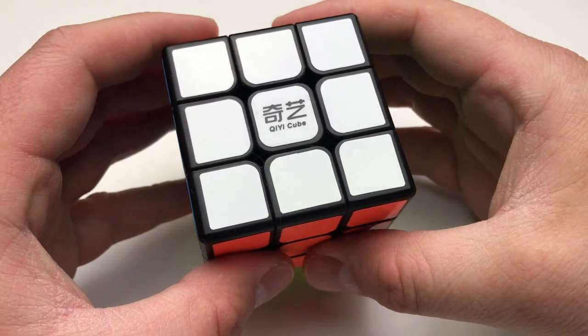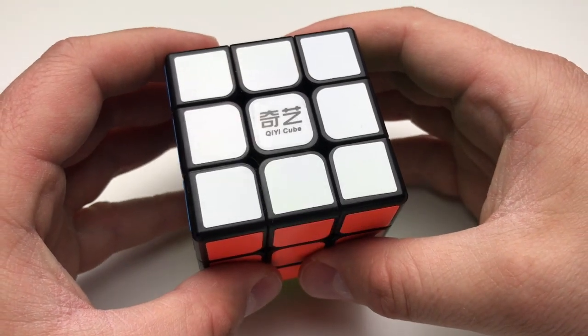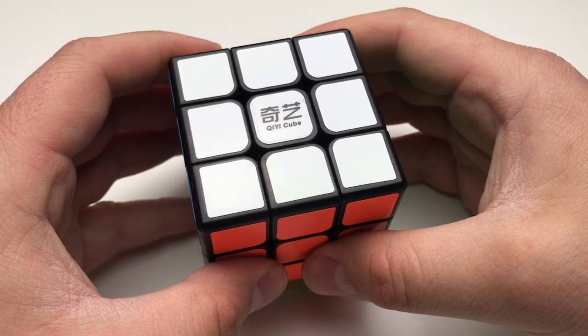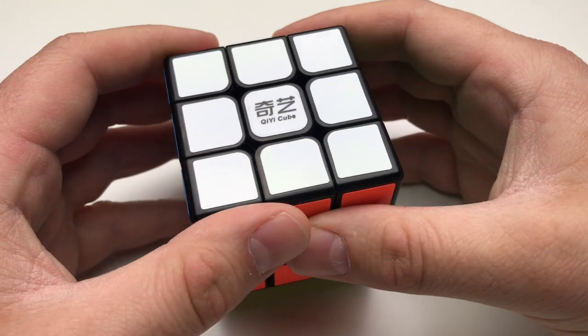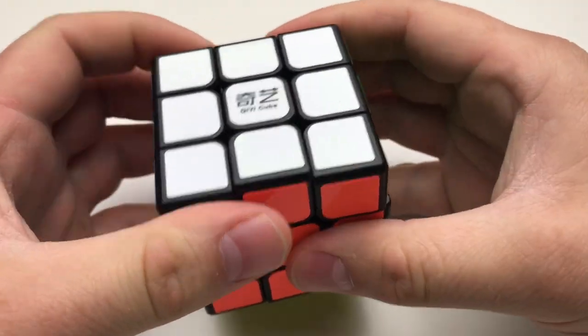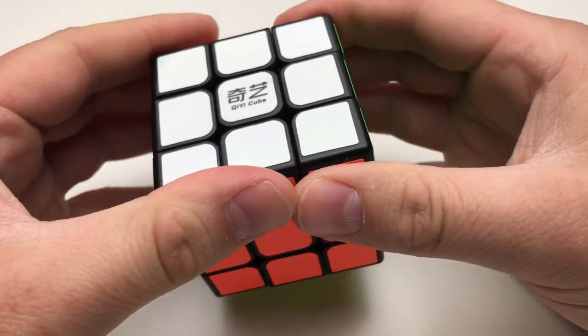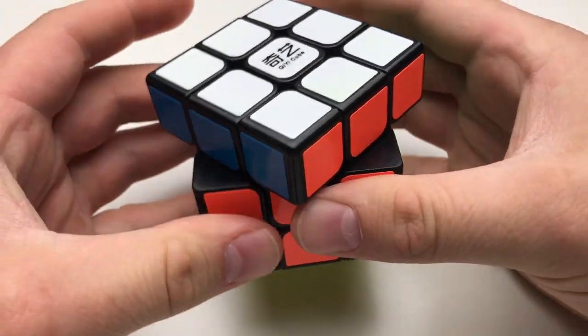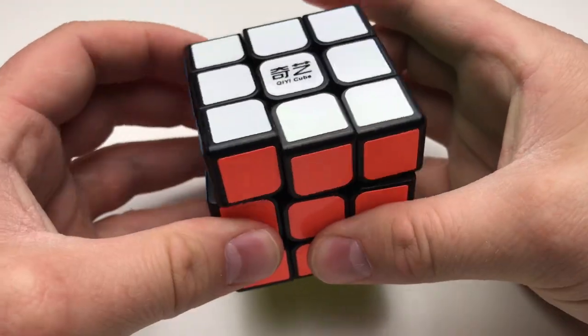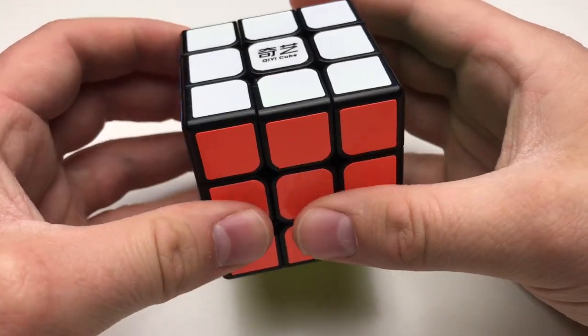All right, so next I have here is the Chi-Yi Sail. So it kind of reminds me of a much larger Moyu Aulong. And it functions about the same, too. It's a very buttery feel, and it turns rather fluid. The piece separation is terrible, but tensionings can fix that a bit. Corner cutting isn't much better, and it's not really cutting past the 30-degree mark. So overall, this puzzle is $4.99, and its only advantage is that it's large.